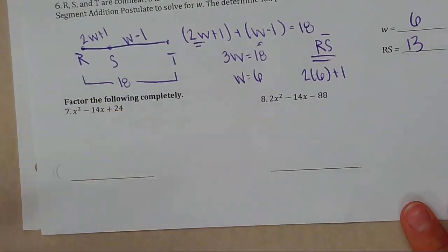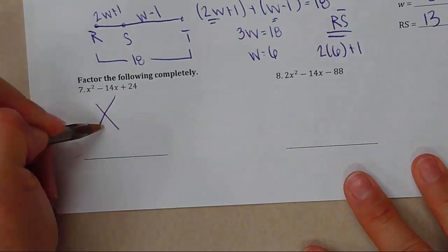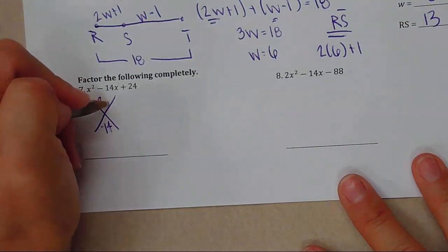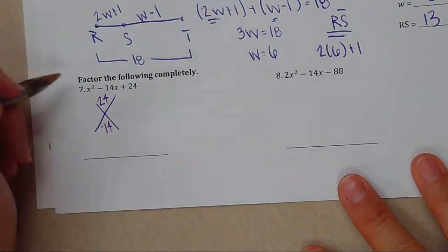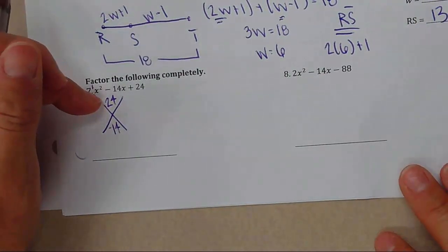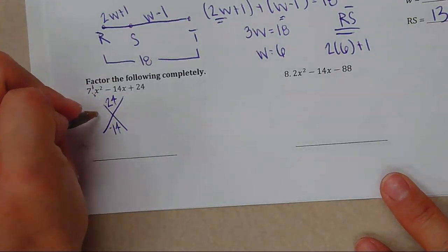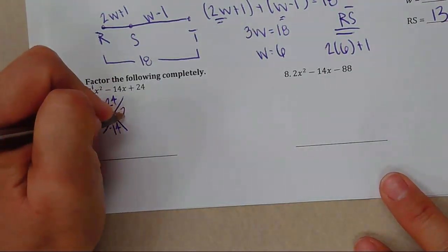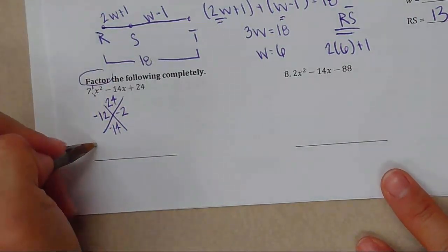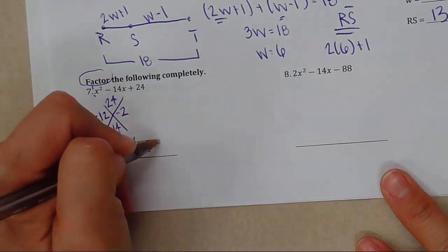Now I'm going to factor. I look for a GCF first — there isn't one. So I take the middle term, negative 14, multiply the first and last coefficients to get 24, and find two numbers that multiply to positive 24 and add to negative 14: that's negative 12 and negative 2. The factored form is (x − 12)(x − 2).